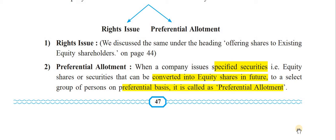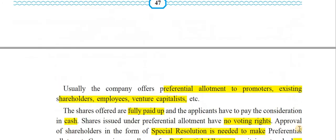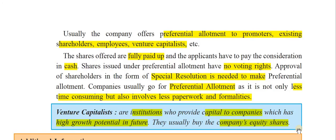Usually, the company offers preferential allotment to promoters, existing shareholders, employees, or venture capitalists. These are all important people connected with the company. Venture capitalists are institutions who provide capital to companies with high growth potential in future, so they will know the company is going to do well and will take up the preferential allotment.